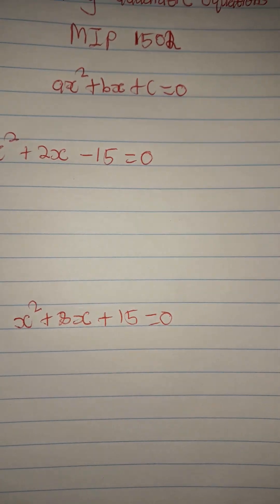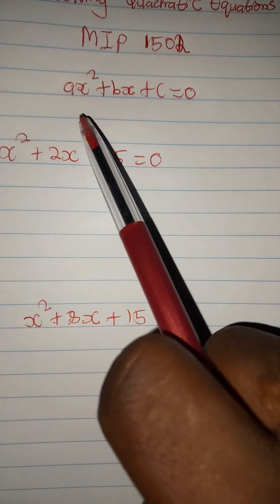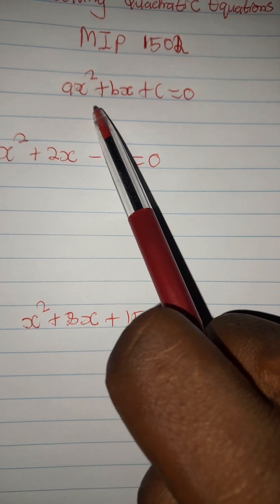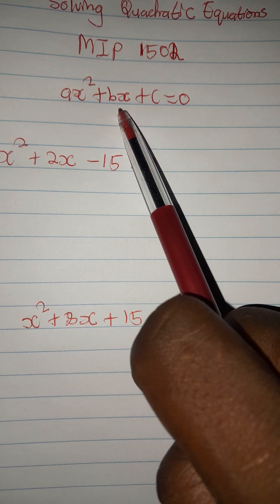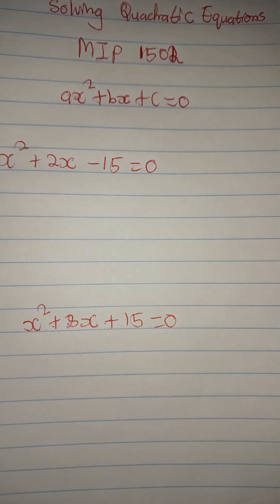This is the standard form of a quadratic: ax squared plus bx plus c equated to zero.